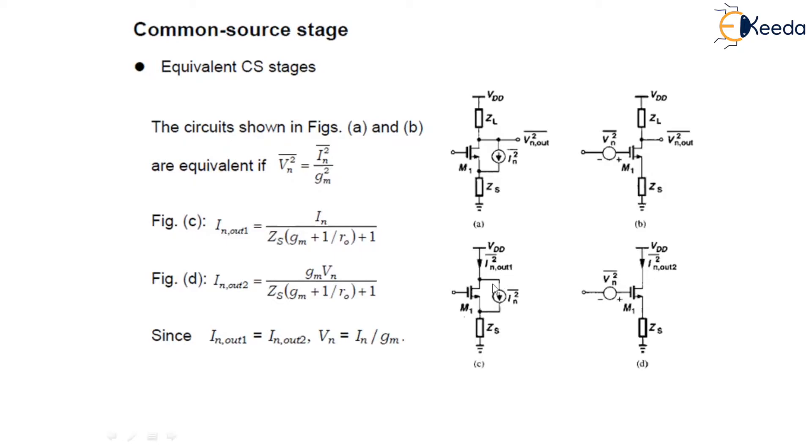You can simply find by using the KCL-KVL rule that Im out1 equals Im upon Zs times Gm plus 1 by R0 plus 1, and Im out2 is given by Gm upon Zs times Gm plus 1 by R0 plus 1.